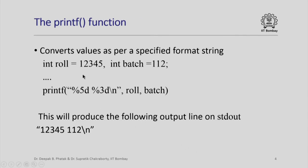Here is a printf function example. Consider we have int role equal to 12345 and int batch equal to 112. These numbers are stored in variables role and batch in internal integer format. If I say printf("%5d %3d\n", role, batch), observe that the first parameter is the format string. The other two are names of variables whose values are to be converted into formatted output. This will produce: 12345 112 followed by a new line character.